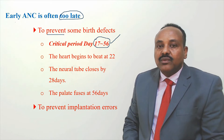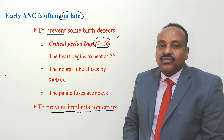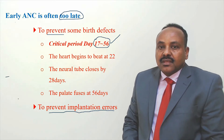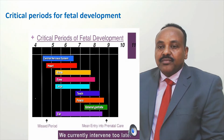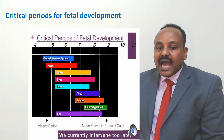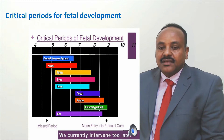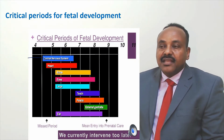As you know, the heart begins beating at 22 days, the neural tube closes by 28 days, and the palate fuses at 56 days. All this organogenesis occurs during a very critical early period in pregnancy. We want to prevent teratogenesis early. We also want to prevent implantation errors which can lead to ectopic pregnancy, abortion, and many risks to the mother. This picture shows the critical period where fetal organs develop — the central nervous system, heart, and arms all develop very early in fetal life.